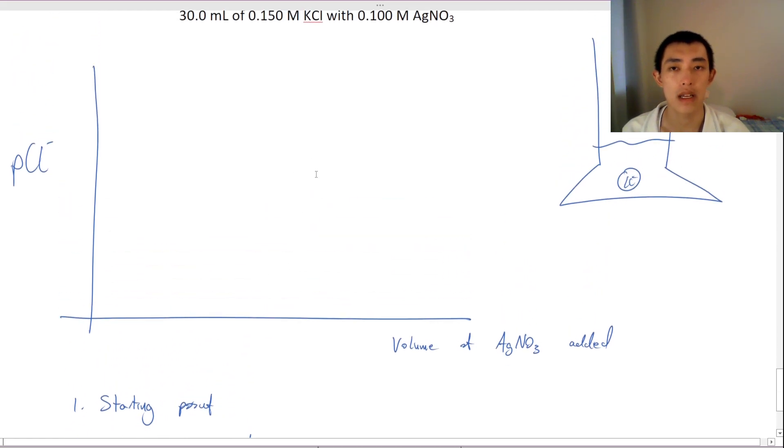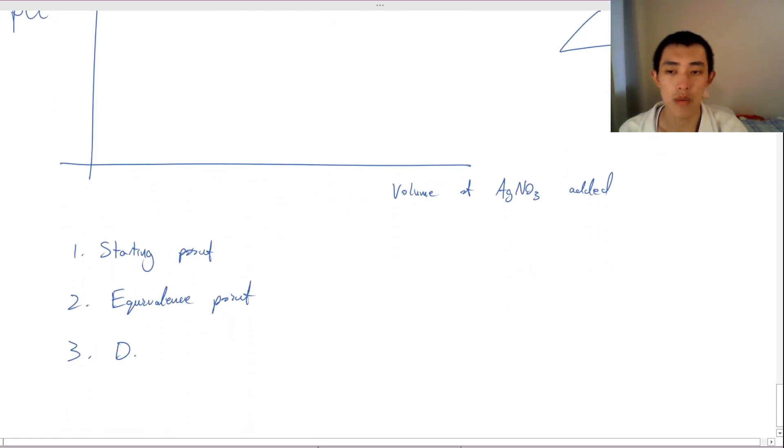And then finally, a third point, maybe let's say double equivalence point. This is arbitrary. So it doesn't need to be like exactly double, but just something after equivalence point is good.